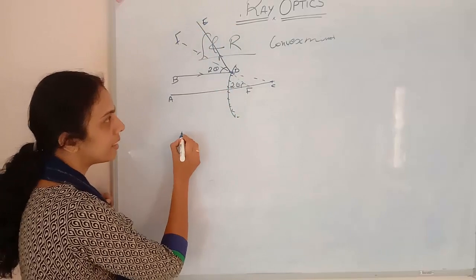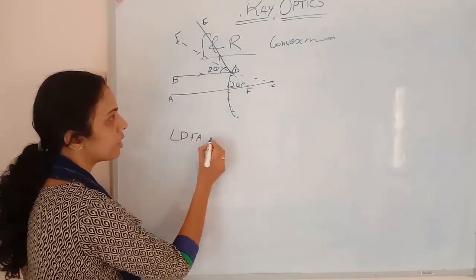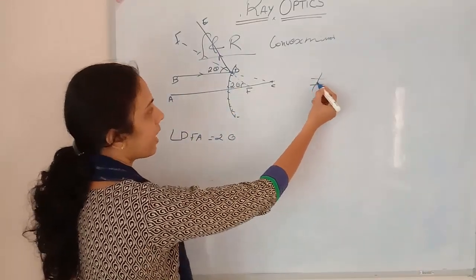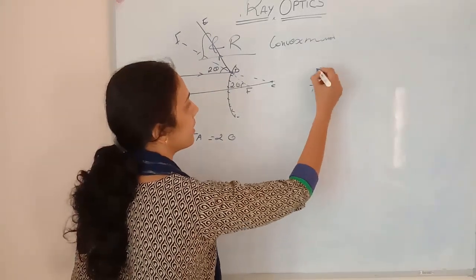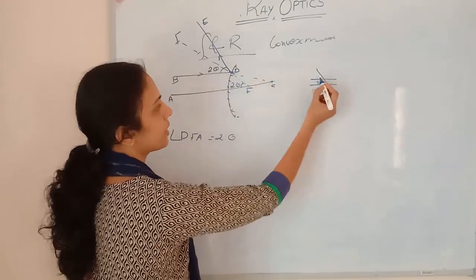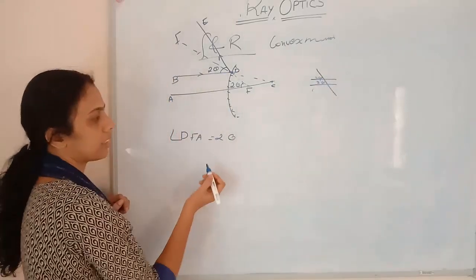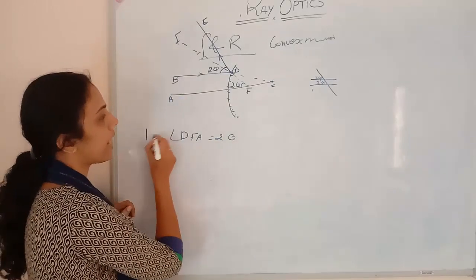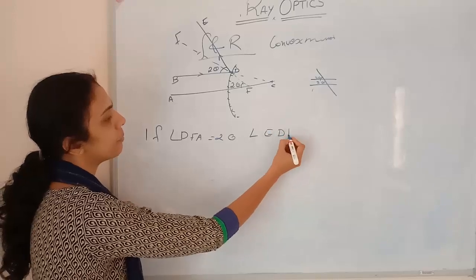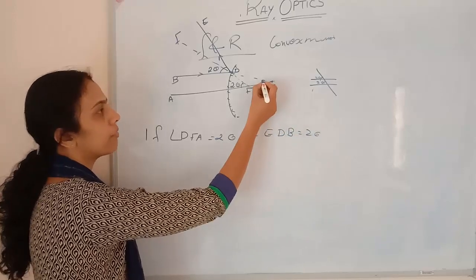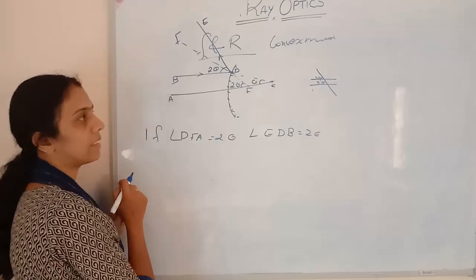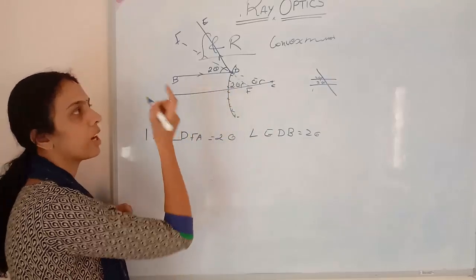So here I consider angle DFA as 2 theta. As I explained yesterday, this line here is 2 theta, and the same line passing through gives 2 theta as well. So angle DFA equals 2 theta, and angle EDB also will be 2 theta. If I consider this as theta, then if this is 2 theta, this one will be theta.